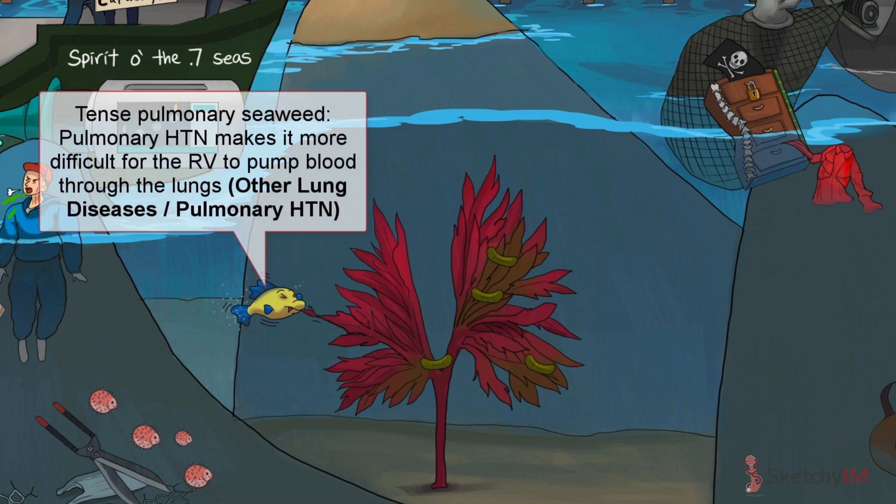Pulmonary hypertension causes chronic dyspnea by increasing resistance in the pulmonary vasculature so much that it becomes difficult for the right ventricle to pump blood through the lungs.